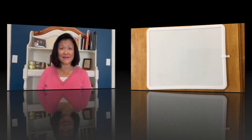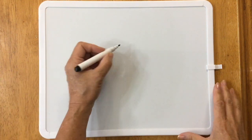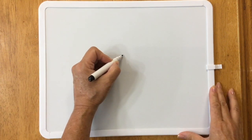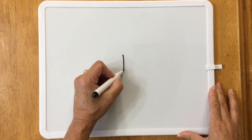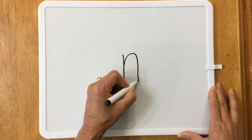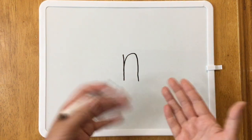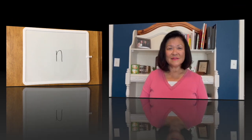Now let's draw the lowercase letter N. To draw a lowercase letter N, you start in the middle, draw a straight line down. Then go up and down and now you're done. Very nice!